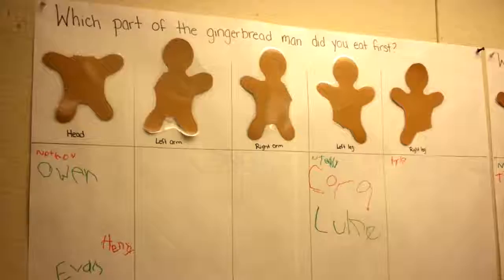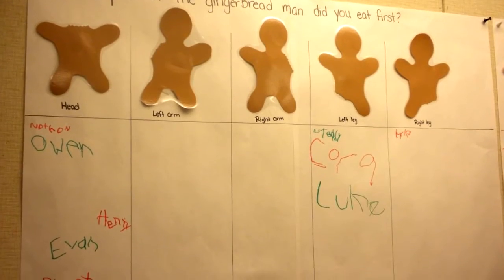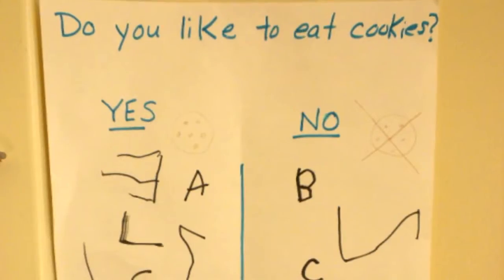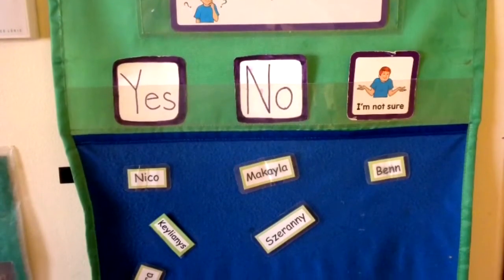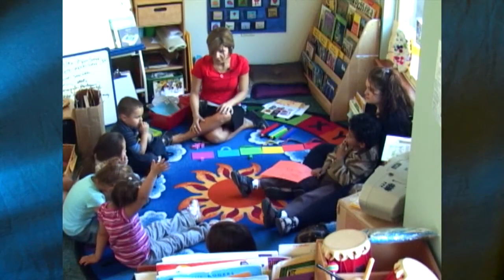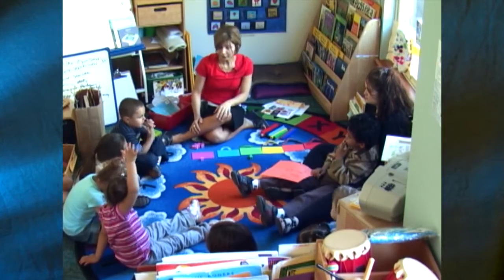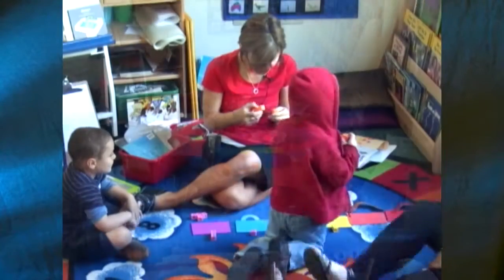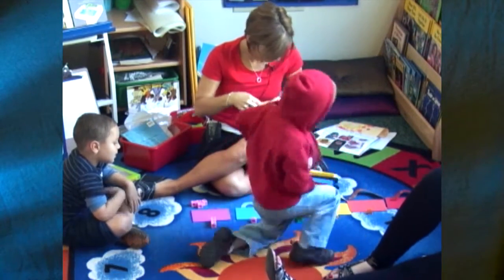Data analysis and working with data offers children interesting opportunities to gather information to find an answer to a question. The important part is realizing that you have a purpose for collecting data. For instance, what's the favorite color in a class? Teachers might invite children to look at the different colors and indicate their choice by picking a block that represents that color. They could then line up the blocks and count them to determine which color is the most favorite.